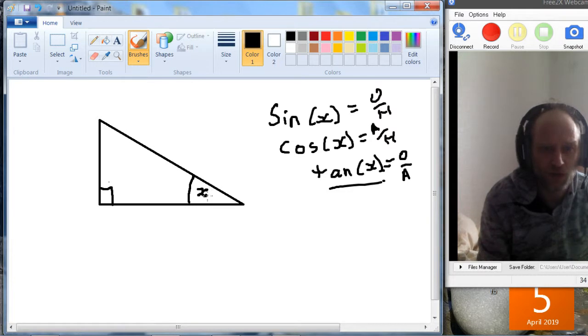Okay, so if we've got the angle x, then this would be the opposite, and this would be the adjacent, and this is the hypotenuse.